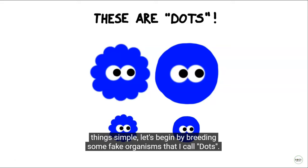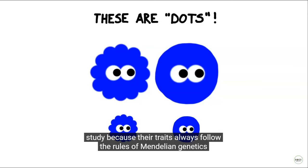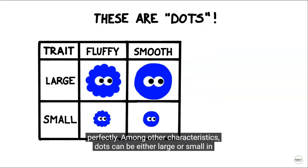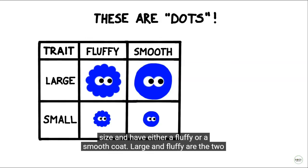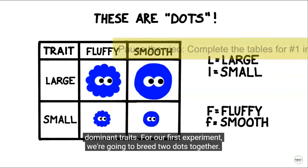To keep things simple, let's begin by breeding some fake organisms that I call dots. Unlike most creatures in the real world, dots are the ideal species for us to study because their traits always follow the rules of Mendelian genetics perfectly. Among other characteristics, dots can be either large or small in size and have either a fluffy or a smooth coat. Large and fluffy are the two dominant traits.